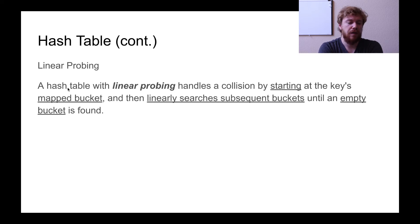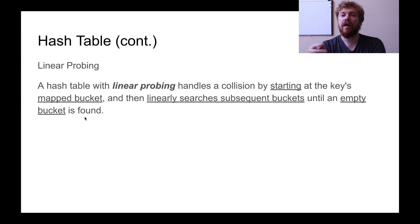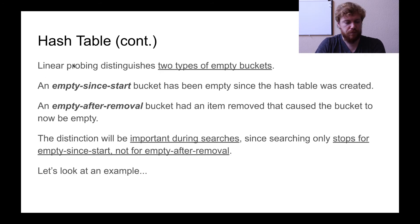Moving on to the other method of handling collisions: linear probing. A hash table with linear probing handles a collision by starting at the key's mapped bucket, and then linearly searches subsequent buckets until an empty bucket is found. The idea is: we're given a key, apply the hash function to get a unique index, go to that bucket, find something already there, and then check the next available bucket — if not empty, move on to the next bucket — until an empty bucket is found, and add the element there.